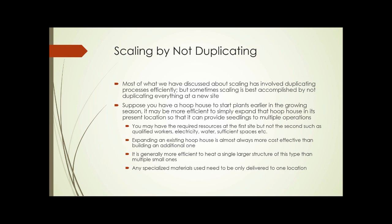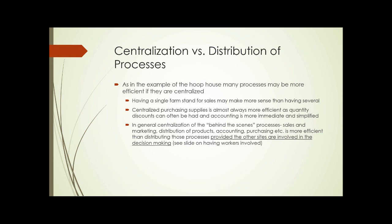If you have a hoop house that's, say, 40 feet long, adding a series of hoops to make it 60 or 80 feet long is generally less expensive than building a whole new hoop house at a new location. And it's generally more efficient to heat a single larger structure than multiple small ones. Any specialized materials needed — the frames, the hoops, the plastic, the batten board, the strapping — only need to be delivered to one location. Efficiencies aren't always gained by duplicating the exact thing.